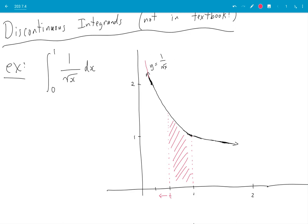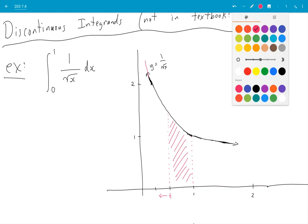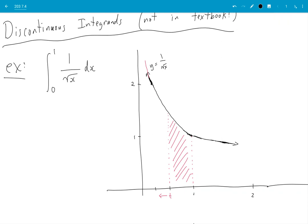And then afterwards we will allow t to move that way. So limit t goes to 0, 0 plus. That's how we will handle these things. So we go limit, always start with limit.